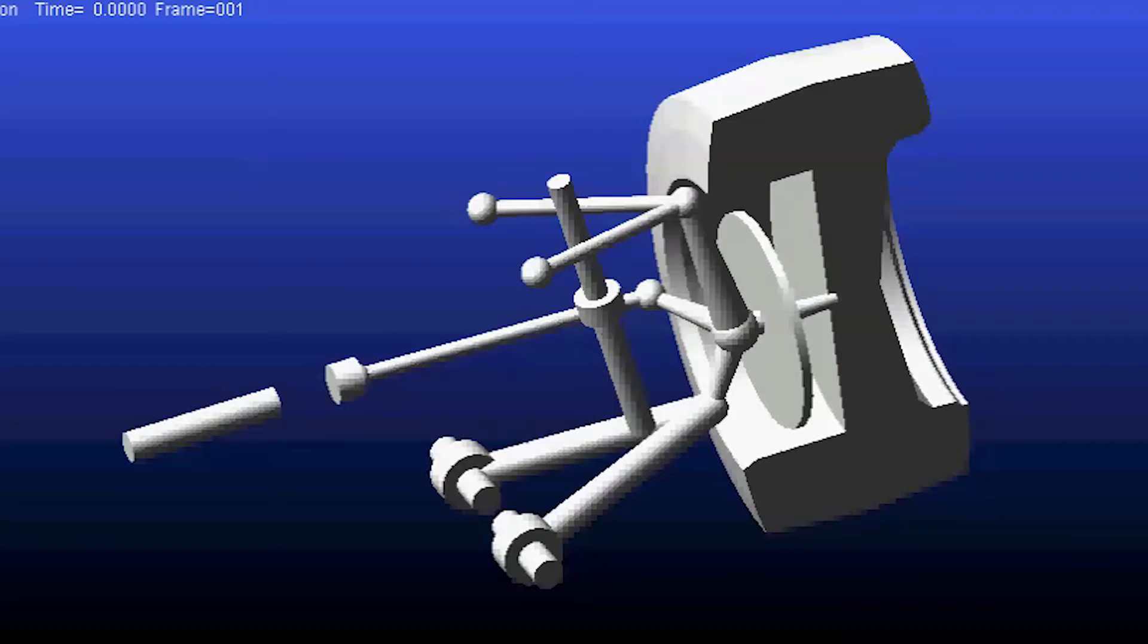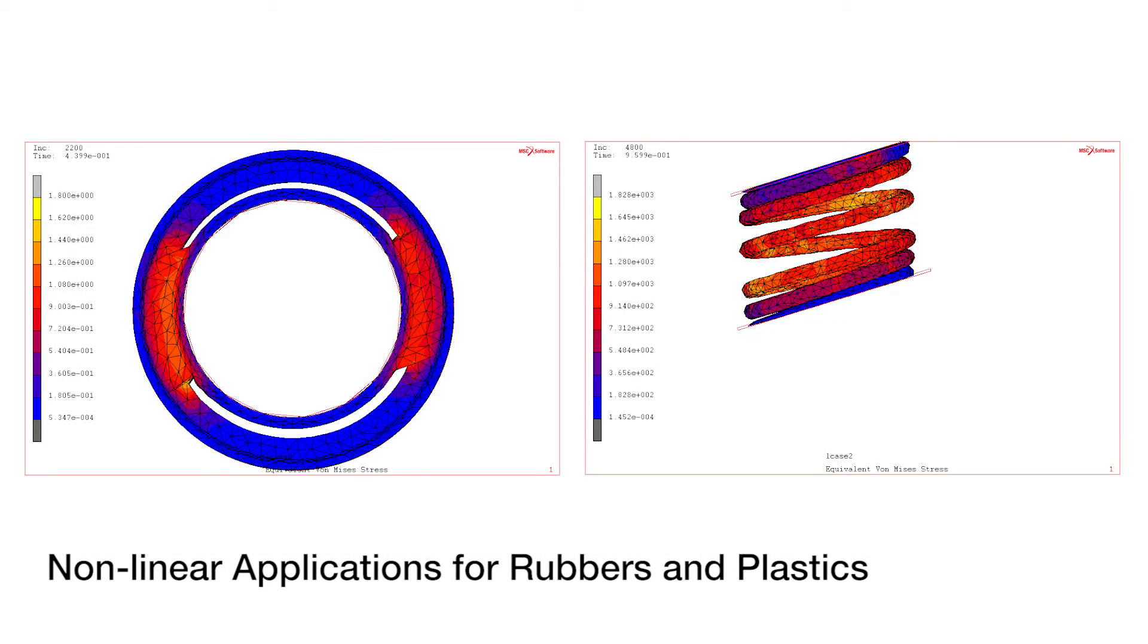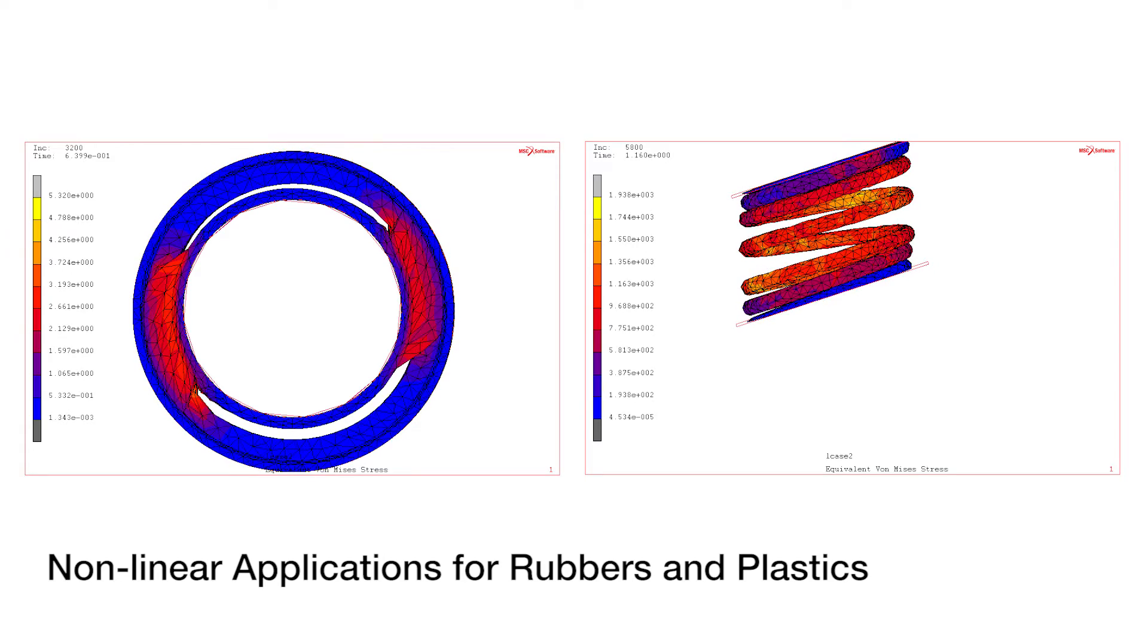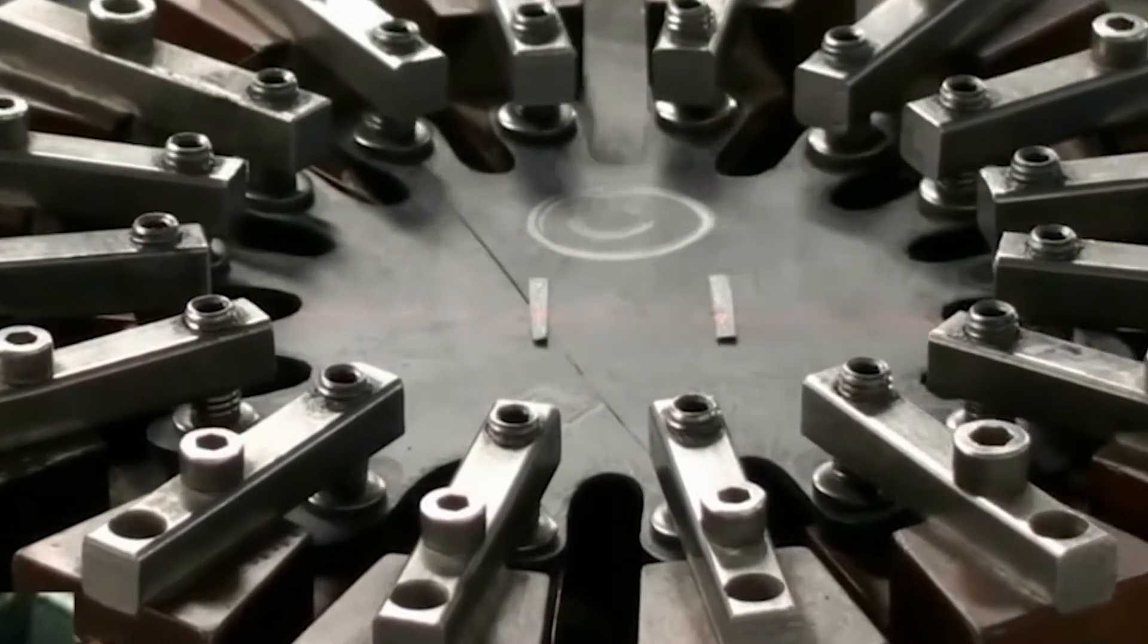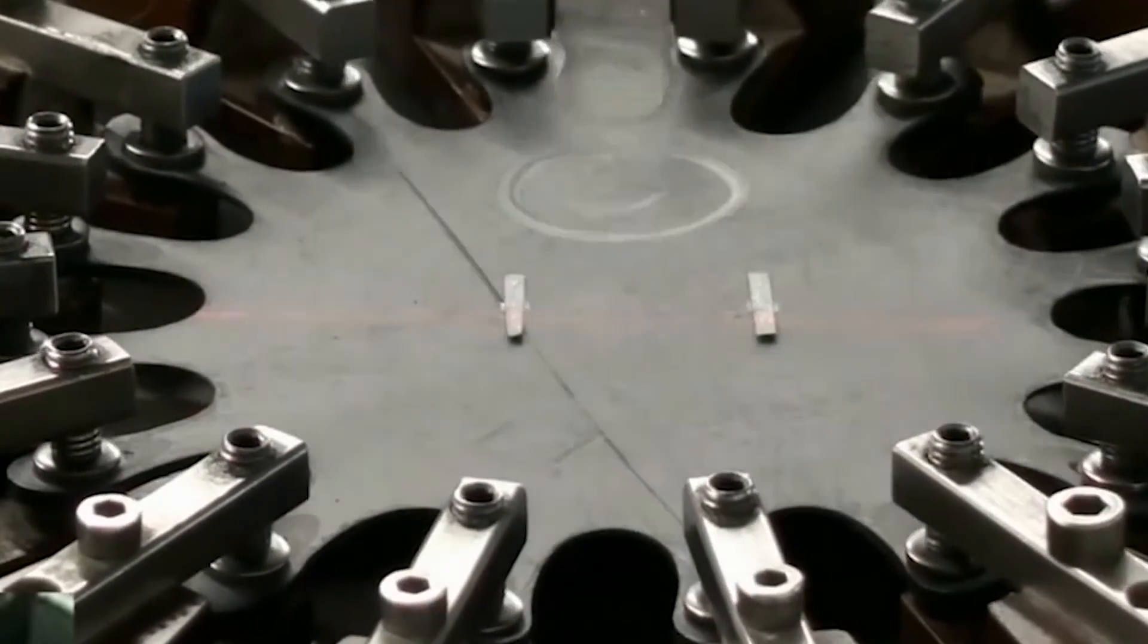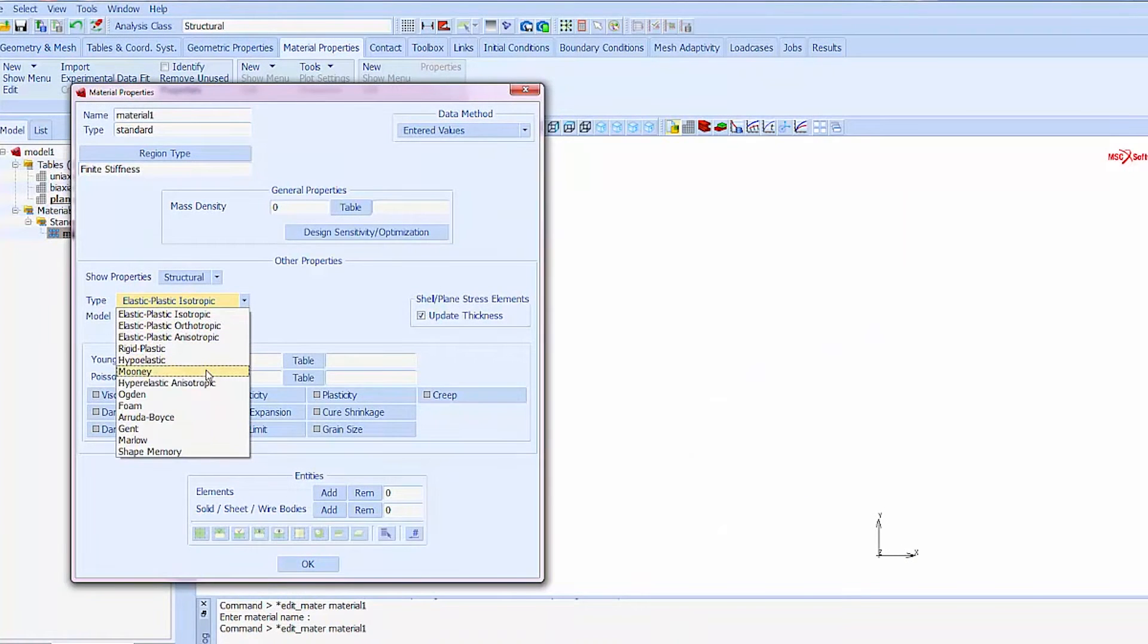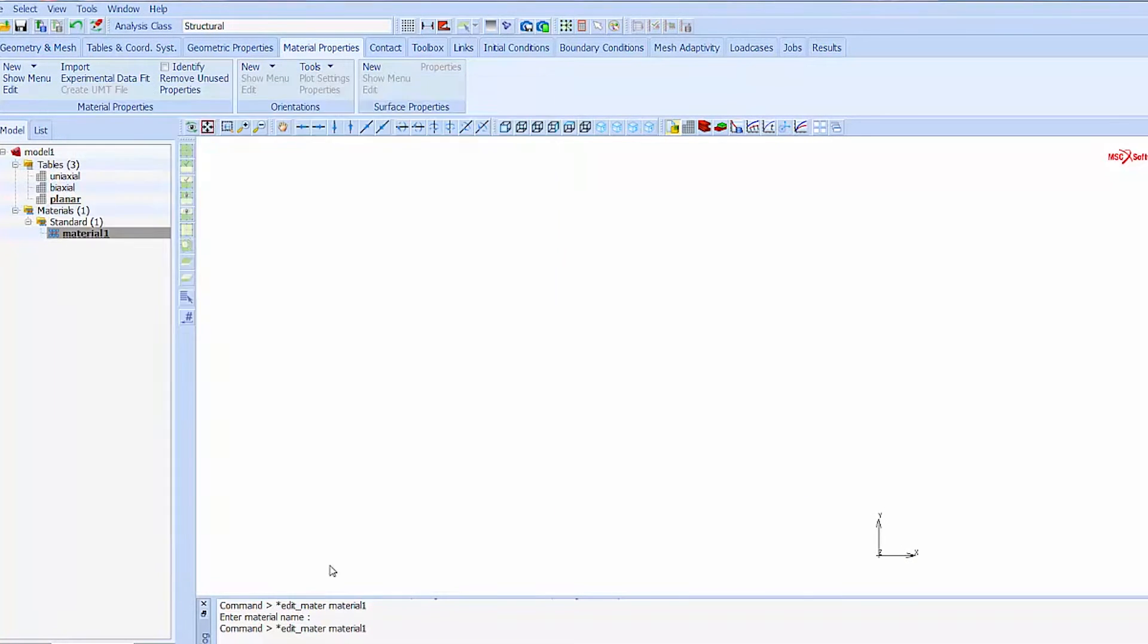Rubber and plastic materials, at least the applications we're involved in, are quite complex and they are nonlinear. What that means is they can't be described with a simple modulus and yield point and Poisson's ratio. They typically involve curve fitting and equations and things of that nature.